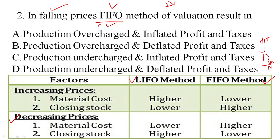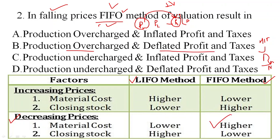In this method, prices are falling, meaning the product first bought was purchased at high prices. But as we move to P2, P3, up to PN, prices drop. So first in — at the higher cost — is now being sold at a lower price. That means production is being overcharged and there's less profit and taxes. Material cost is high, closing stock is lower, resulting in less profit and therefore less taxes.